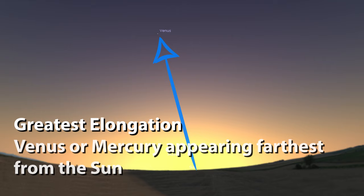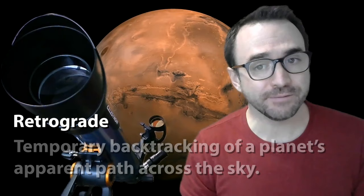Opposition is generally a great time to see a planet with a telescope. Less frequently, you may hear the term greatest elongation. This only refers to Venus and Mercury and occurs when the planet appears farthest from the sun when viewed from earth. You may also hear the term retrograde, which simply means that the earth has passed a planet in its orbit, just like you might pass another car on the freeway.